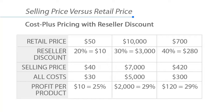If the retail price is $10,000 and we're providing a reseller discount of 30%, or $3,000, then we're selling the product to the reseller or distributor for $7,000. If our costs to make and sell that product are $5,000, then our profit per product is $2,000 — which is $7,000 minus $5,000 — and that represents a 29% profit.